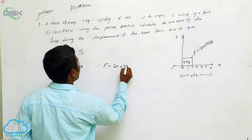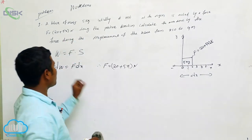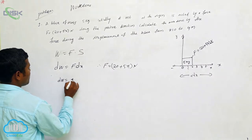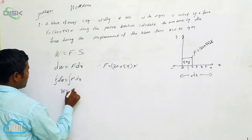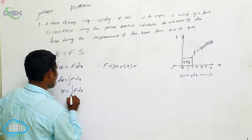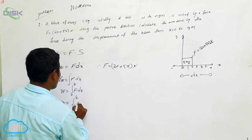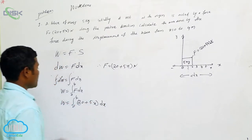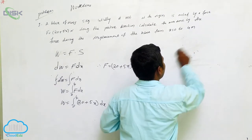Substituting the given force F = 20 + 5x into dW = F · dx, to get the total work done we integrate both sides. So W = ∫F dx. Applying the limits from x = 0 to x = 4, we get W = ∫₀⁴ (20 + 5x) dx.